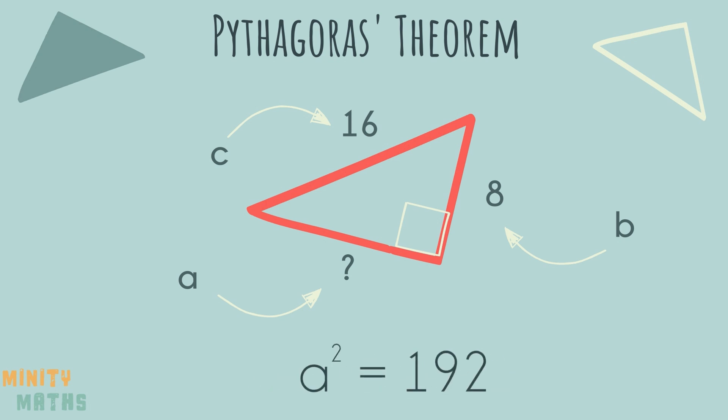Therefore, a squared equals 192. Finally, we find the square root of 192 to get the length of the missing side.